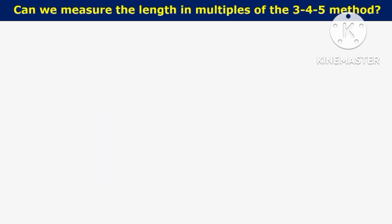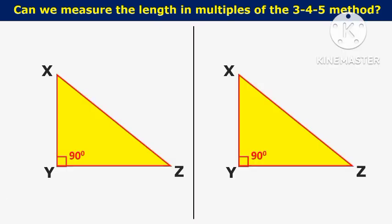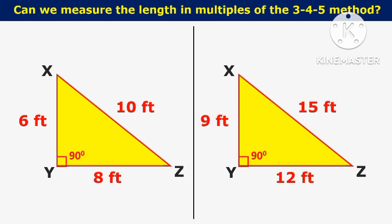So can we measure the length in multiples of the 3-4-5 method? Yes. As you can observe in the drawing, if you measure 6 feet and 8 feet along the sides, the hypotenuse should be measured for 10 feet length. Similarly, by multiplying 3-4-5 by 3, we can use the measurements 9 feet, 12 feet, and 15 feet to carry out the layout.